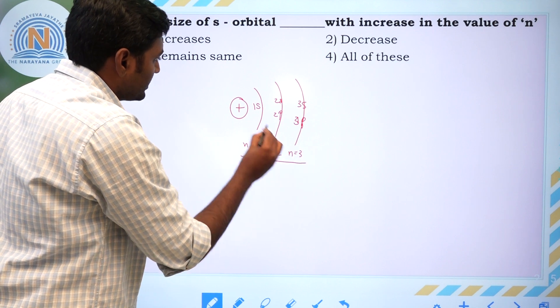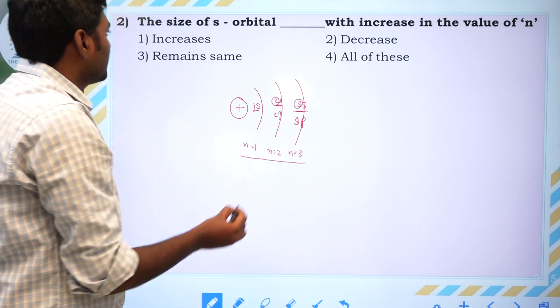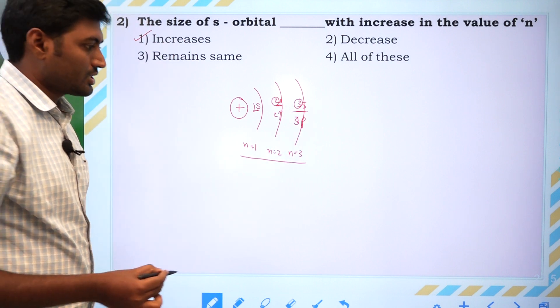If N value increasing, the size of S orbital also increasing. Answer is increases.